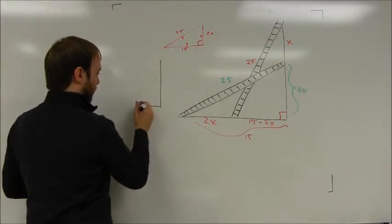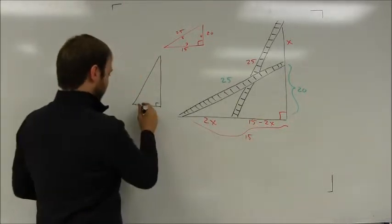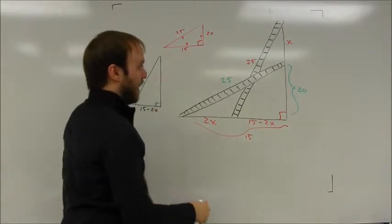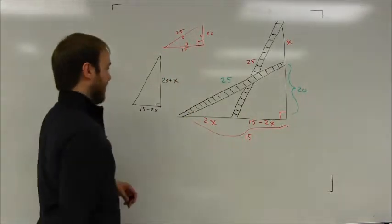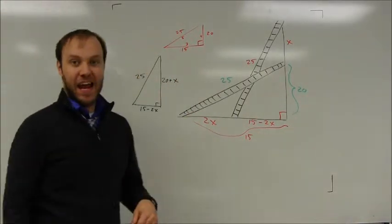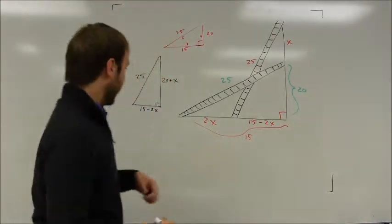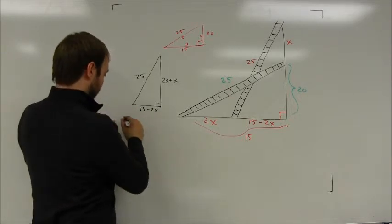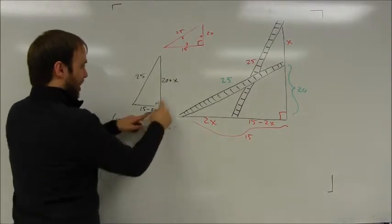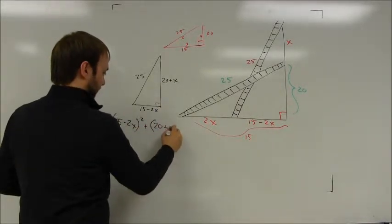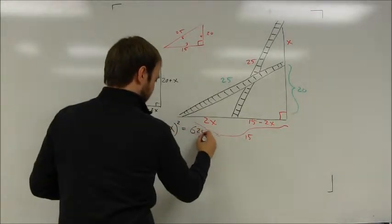Just looking at that taller triangle, I've got a length of 15 minus 2x across the bottom. The height is actually 20 plus x. And then the hypotenuse is going to be 25. And once again, as soon as I have all three sides of the right triangle labeled, I can fill that into the Pythagorean theorem. So it's going to be (15 minus 2x)² plus (20 plus x)² is equal to 25² which is 625.